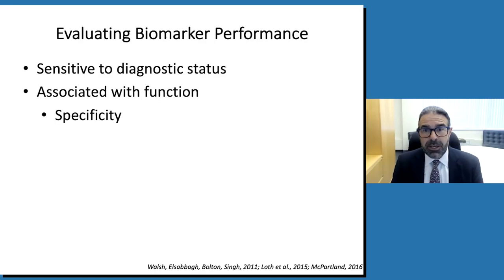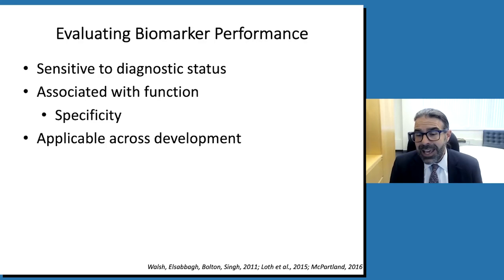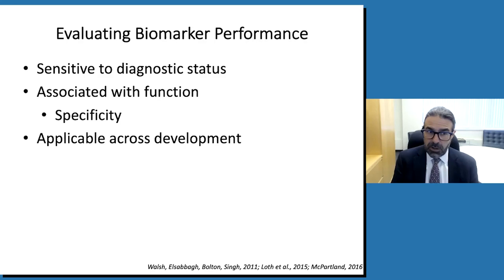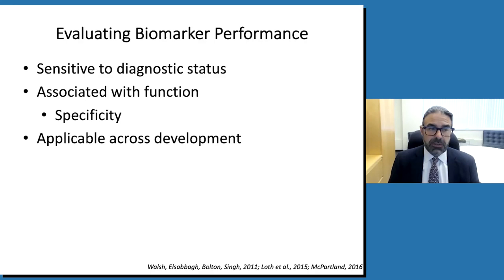It's important to understand the applicability of a biomarker across development in autism, because autism could mean a three-year-old, a 30-year-old, or a 60-year-old. Especially for brain-based biomarkers, we expect the brain to look and function really differently at these different stages of development. So we want to understand whether biomarkers are applicable across this age range, or whether we need different batteries of biomarkers for different periods of human development.